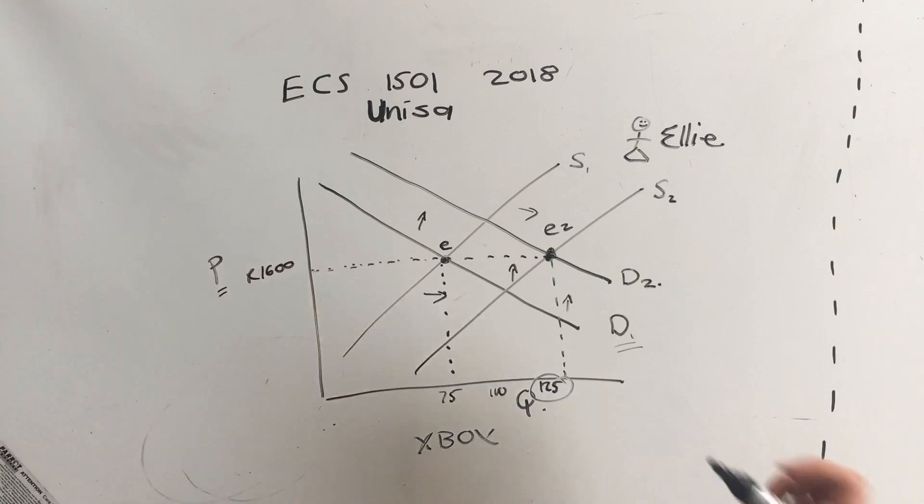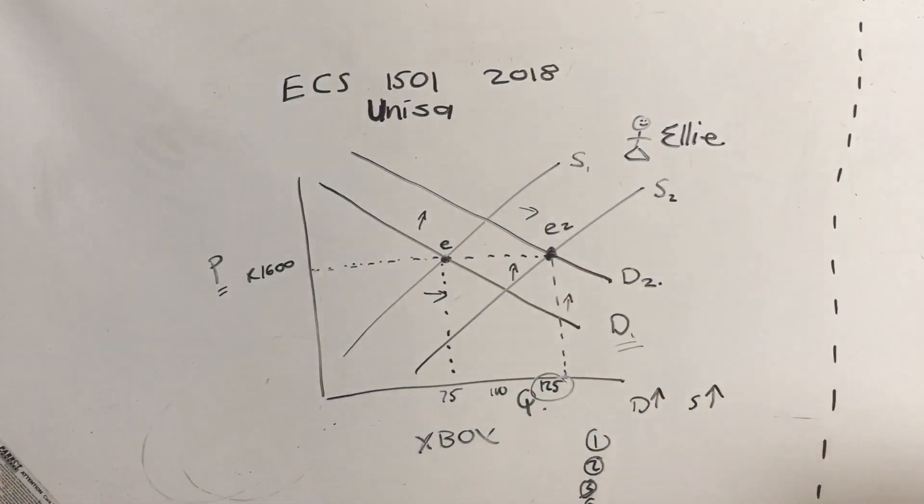How this will look in a multiple choice is they will say if demand increases and supply increases, choose which one would be correct. Let's just see if this is still fitting into the screen, let me move it.